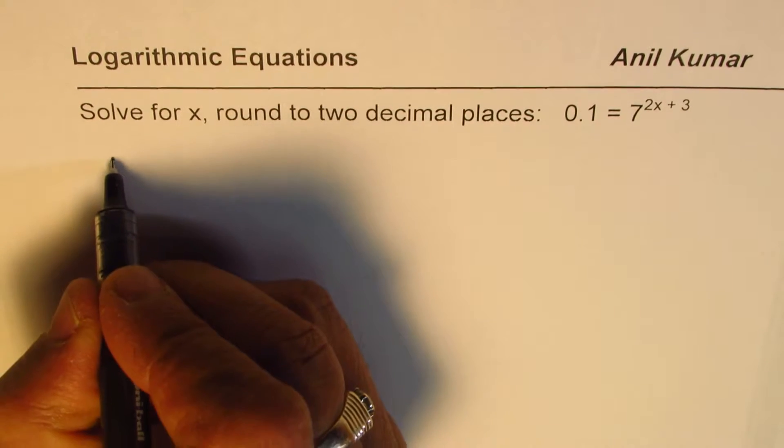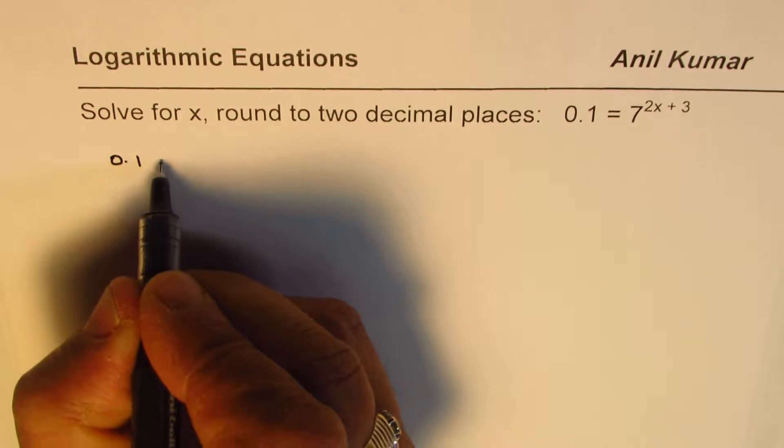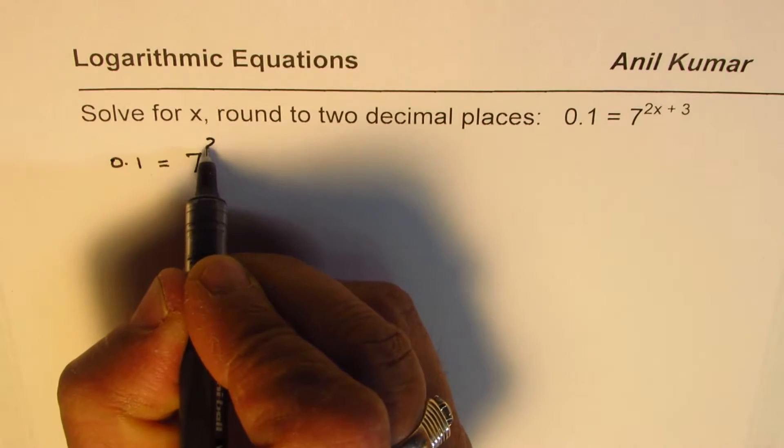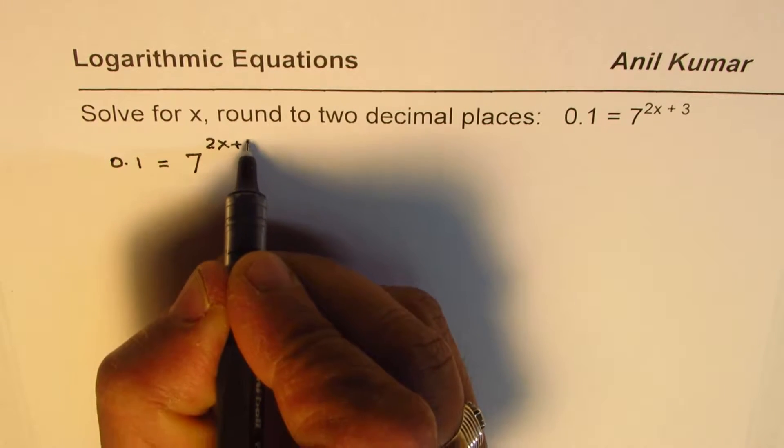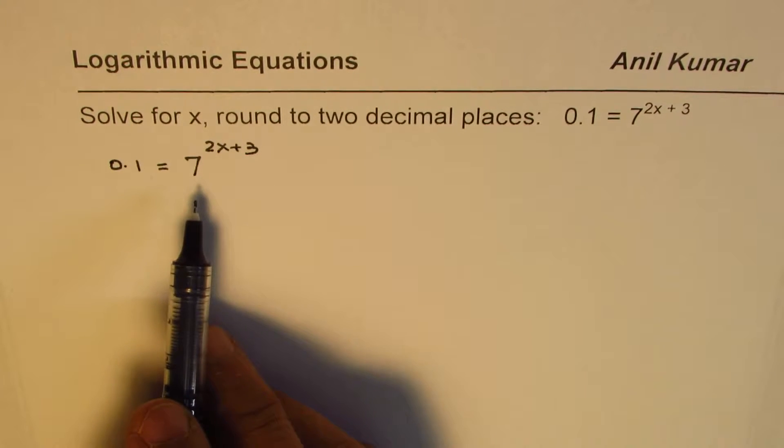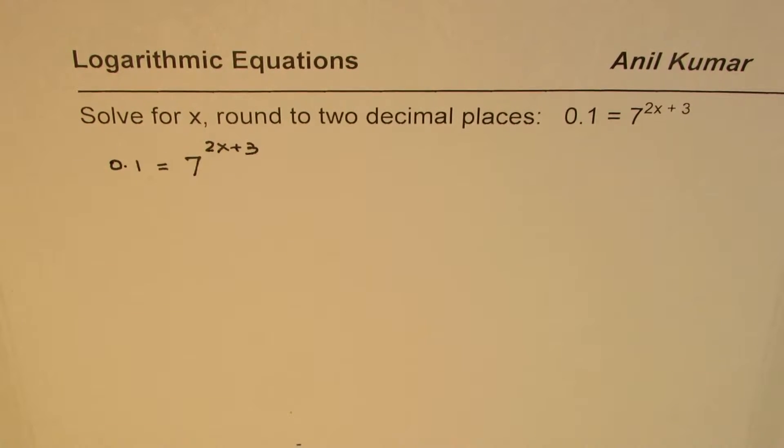Let me rewrite this equation: 0.1 = 7^(2x+3). We have to solve for x. Now in such equations, we can take logarithms on both sides. We will take log to the base 10 so that we can use the calculator and evaluate the answer.